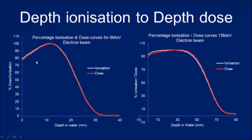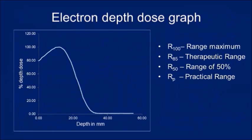For a 6 MeV electron beam, the depth dose curve (red) and depth ionization curve (blue) show a small difference in millimeters, which is nonetheless important. For 15 MeV, the difference between the depth ionization and depth dose curves is more pronounced. When using an ion chamber for depth dose measurement, this conversion must always be taken into account.